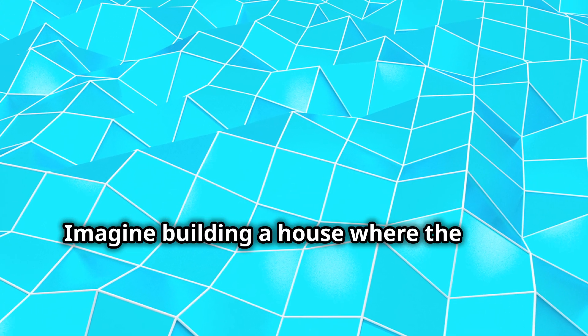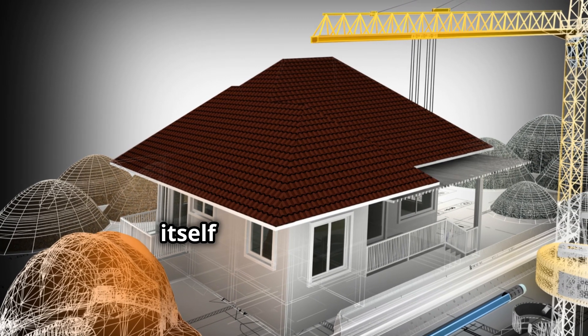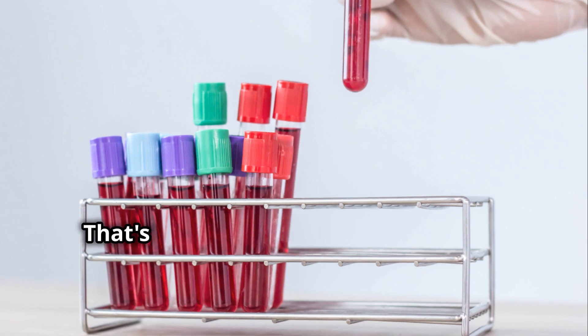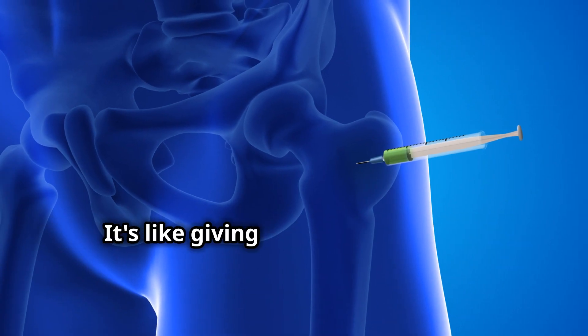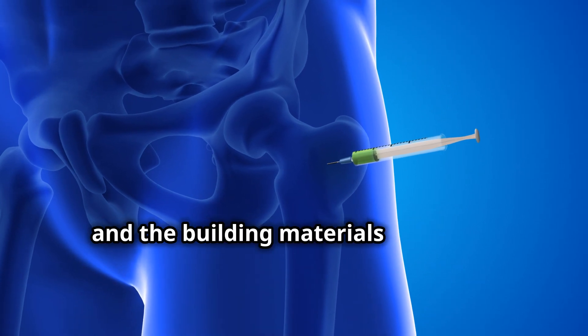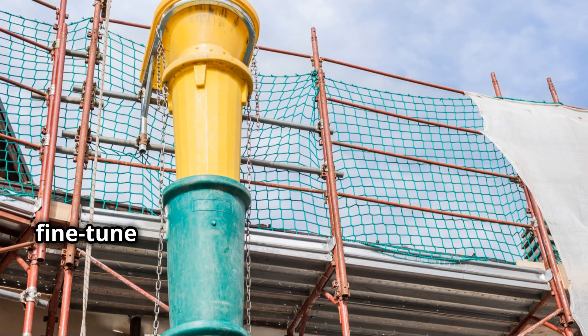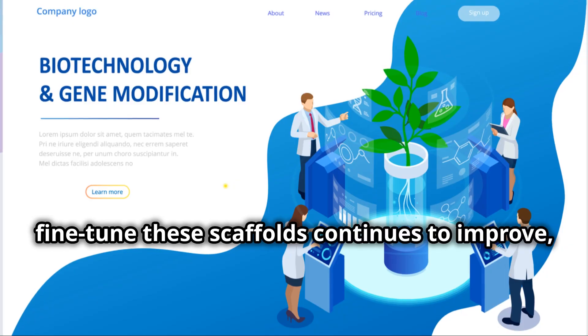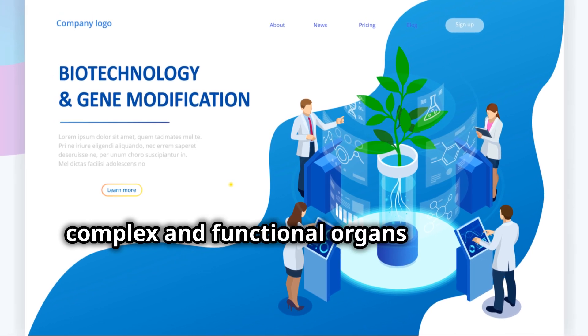This level of precision is crucial for creating complex organs with multiple cell types and intricate structures. Imagine building a house where the walls know to become walls, the windows know to become windows, and the plumbing magically assembles itself in the right places. That's the level of sophistication we're talking about with bioengineered scaffolds. It's like giving the cells a blueprint and the building materials all in one. And as our ability to manipulate and fine-tune these scaffolds continues to improve, so too will our ability to create more complex and functional organs in the lab.